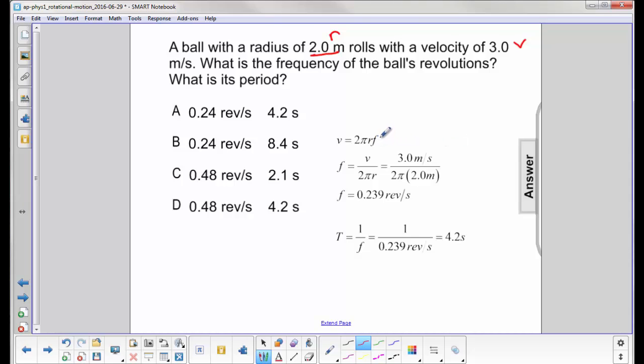So we rearrange the equation here. Frequency, divide both sides by 2 pi r. Frequency is velocity over 2 pi r. Plug in the numbers, and we get the frequency is 0.239 revolutions per second.